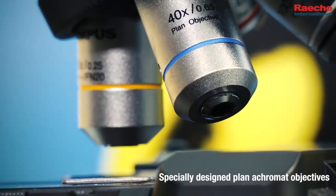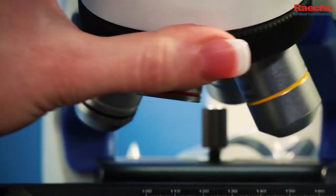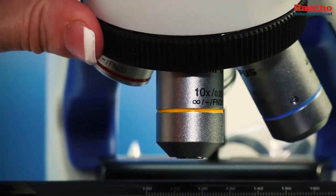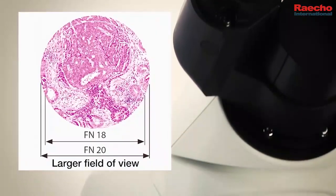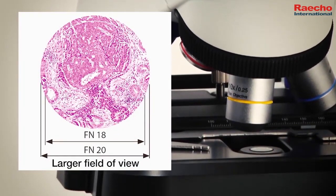It comes with the option of three or four specially designed Plan Acromat objectives that offer a flat image throughout the field of view. The CX-23 microscope also offers a large field of view, enabling students to view more of their sample at one time.